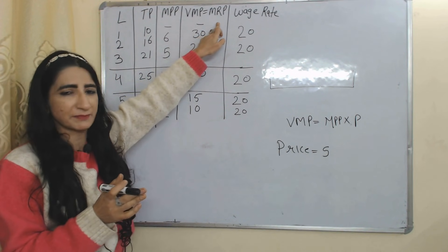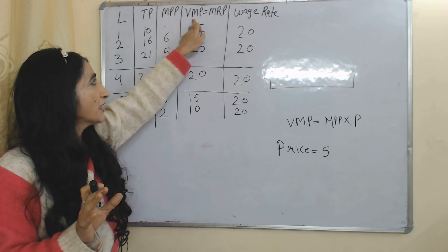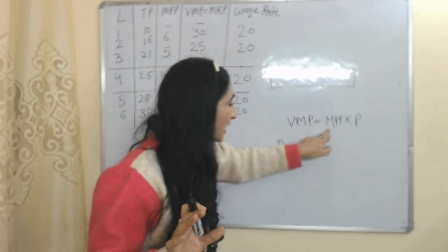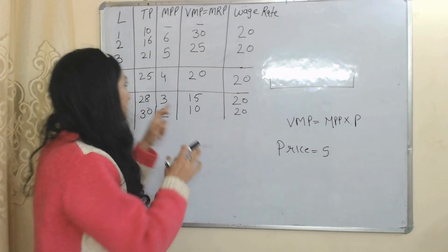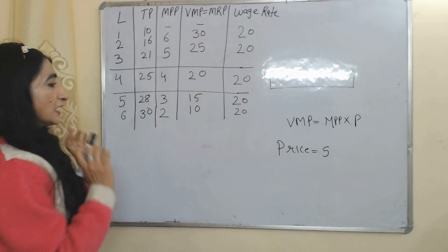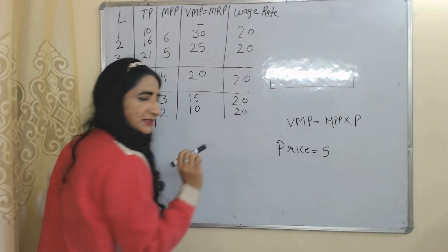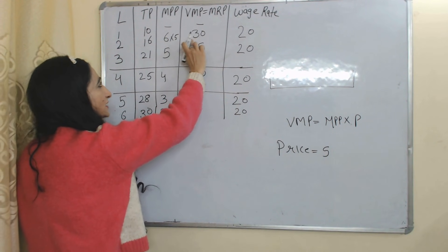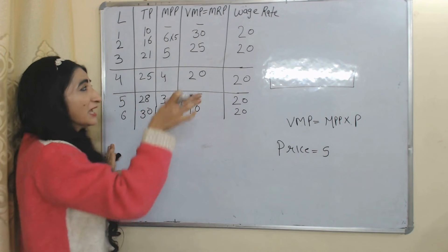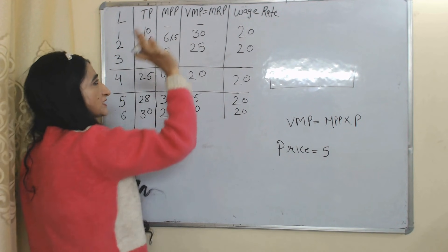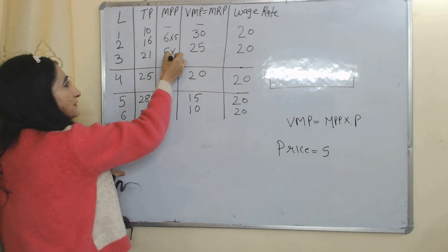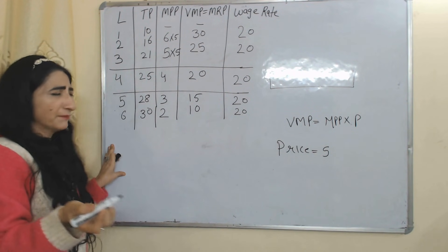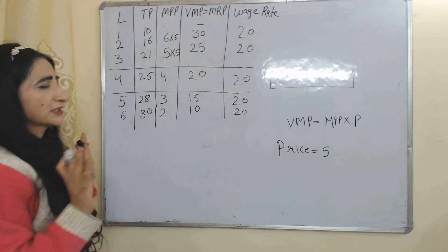The next columns are VMP and MRP. In this theory we assume VMP is equal to MRP. We calculate VMP by multiplying price with Marginal Physical Product. In this theory we assume price is equal to 5, so when we multiply 6 by 5 it becomes 30 — that 30 is our VMP. Similarly, when we multiply 5 by 5, it equals 25, which is the VMP for that unit. We can calculate similarly for other units.